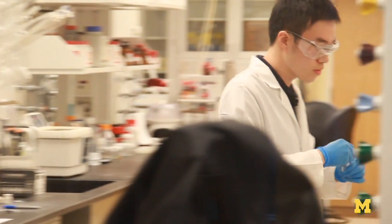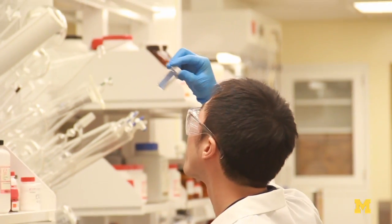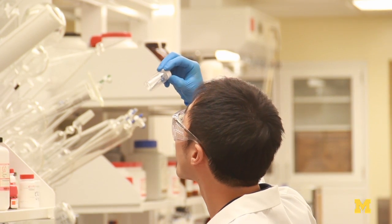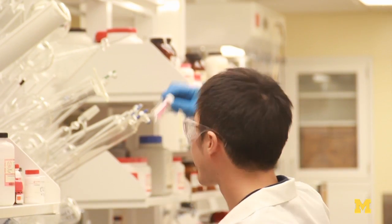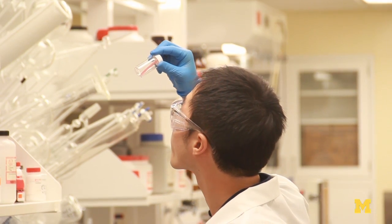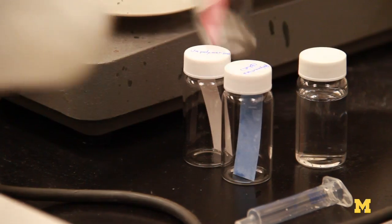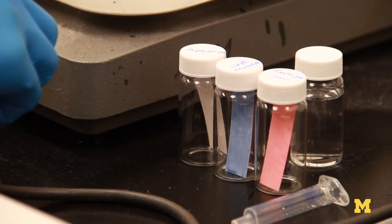We basically developed like a pH paper or a litmus paper-like colorimetric sensor. The material we use is so-called stimuli sensitive conjugated polymer. And depending on external stimuli, this material changes color basically.